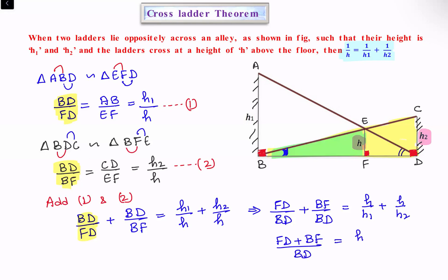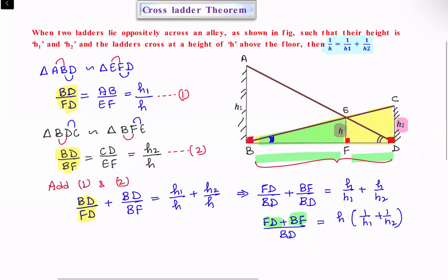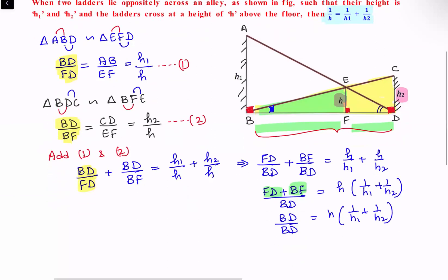On the right side, h is common, giving us 1/h1 + 1/h2. Now FD + BF equals the full length BD, and BD/BD equals 1. So we get 1 = h(1/h1 + 1/h2). Moving h to the other side, we get 1/h = 1/h1 + 1/h2, and that's the result for the cross-ladder theorem.